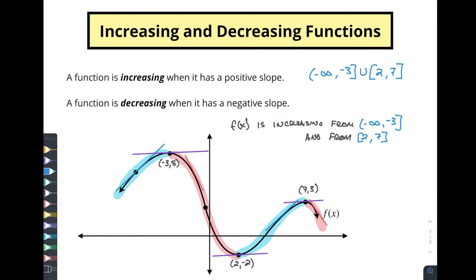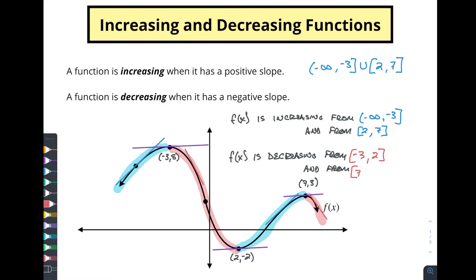Now it's decreasing from negative three — the x value of negative three — all the way down to two. So f of x is decreasing from negative three to two. And then again from the x value of seven on to positive infinity, from seven to positive infinity. Using set notation, we'll have negative three to two union with seven to infinity.